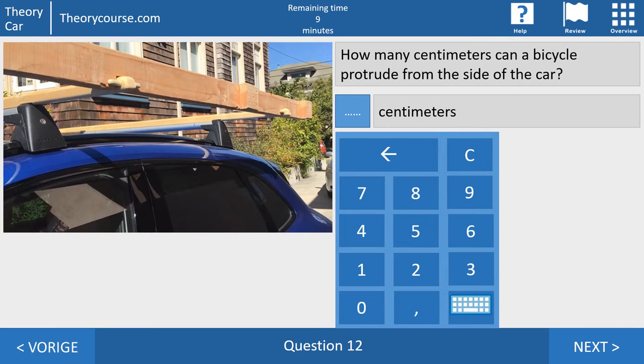Question 12. How many centimeters can a bicycle protrude from the side of a car? And at the CBR, you must push the right buttons. And the right buttons are 20 centimeters. And remember those 20 centimeters because this question you get a lot of times at the CBR.